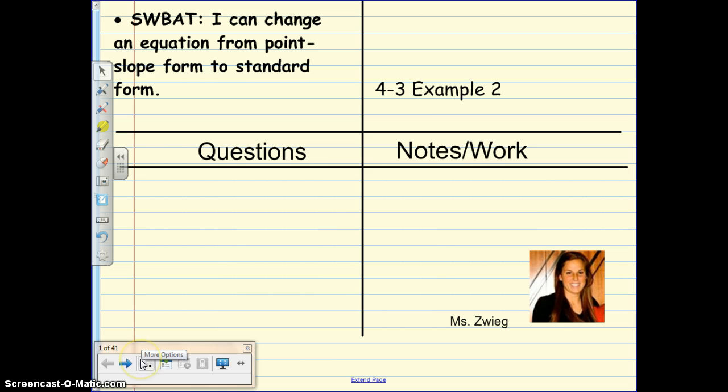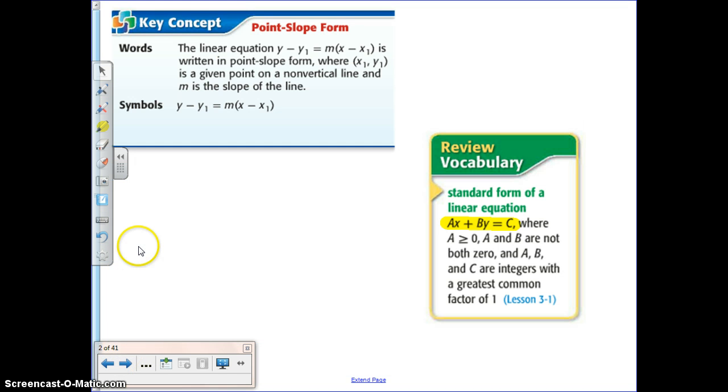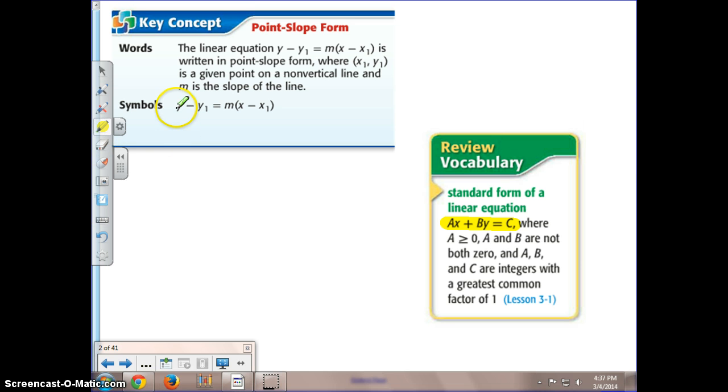So the first part of 4.3, we already covered writing our equations in point-slope form, and now we want to see, can I change that point-slope form to standard form? Just a little bit of a reminder about point-slope form, so that's this equation right here.